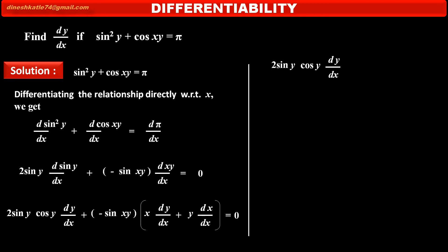The first part of the equation gives 2 sin y · cos y · dy/dx. In the second part, multiplying the bracket by minus sin(xy), we get: minus x · sin(xy) · dy/dx, and since minus sin(xy) times y gives minus y · sin(xy), times the derivative of x which is 1. This equals 0.